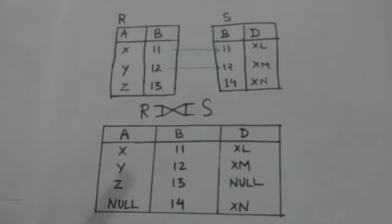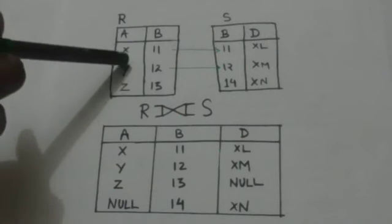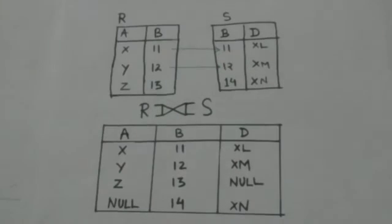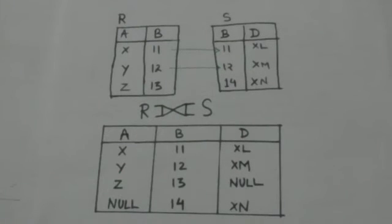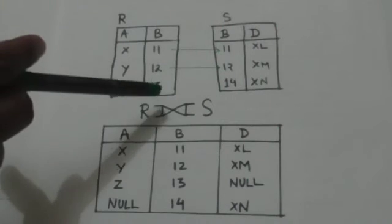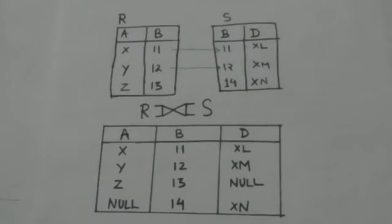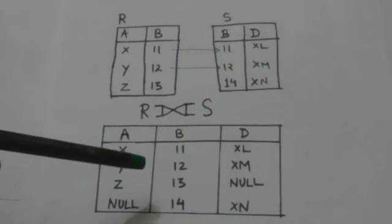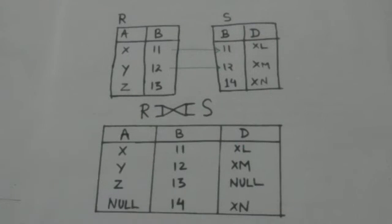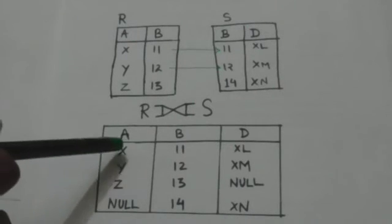For example, this is the relation R and this is the relation S. The result of this full outer join operation is this relation. The resulting relation keeps all tuples of both relations R and S.